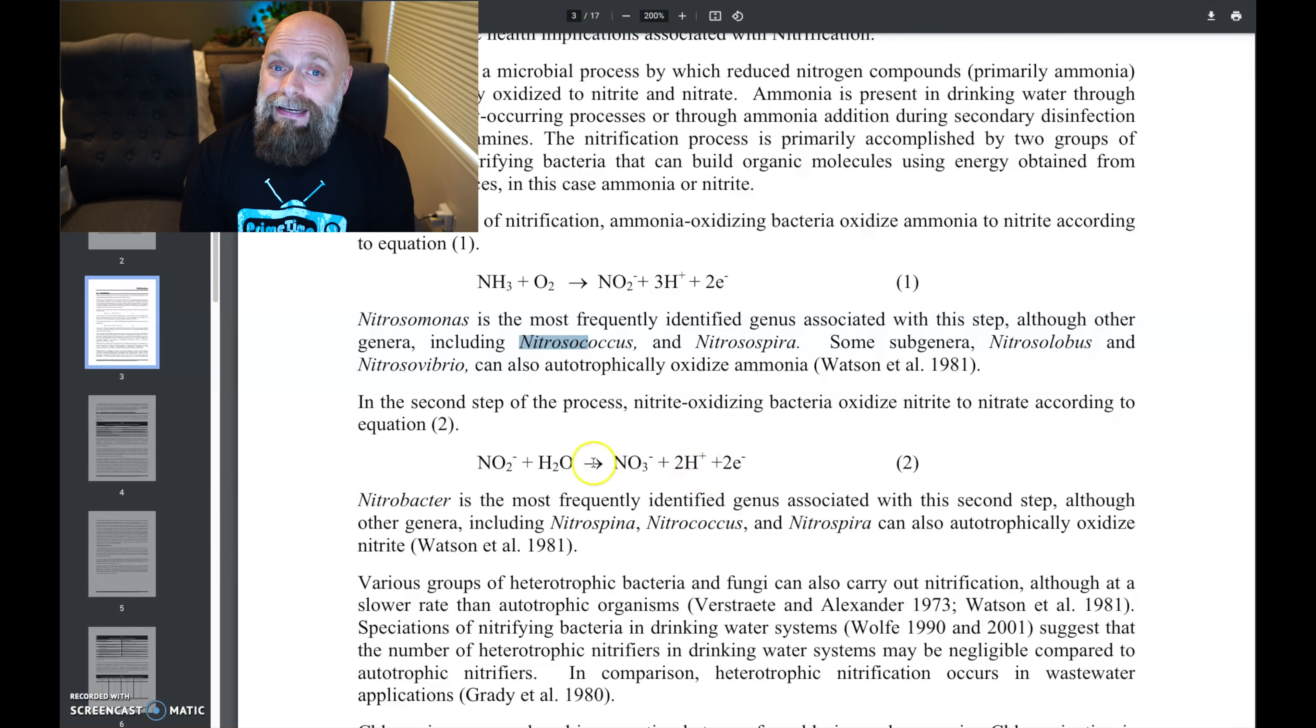Now, the next step in the nitrification process, which we commonly call cycling a tank or the nitrogen cycle, is this right here. And this is nitrite, which was produced as a waste product above, to nitrate. The nitrate, the NO3, is what we are usually trying to control via water changes. So when we do water changes every single week, it's the nitrate that we're trying to keep for us, ideally below 20 parts per million. And we do water change percentages based on that. Okay, so now that we have that part, let's talk about why this matters. So we've got Nitrobacter, Nitrospina, Nitrococcus, and Nitrospira that is responsible for doing nitrite to nitrate.